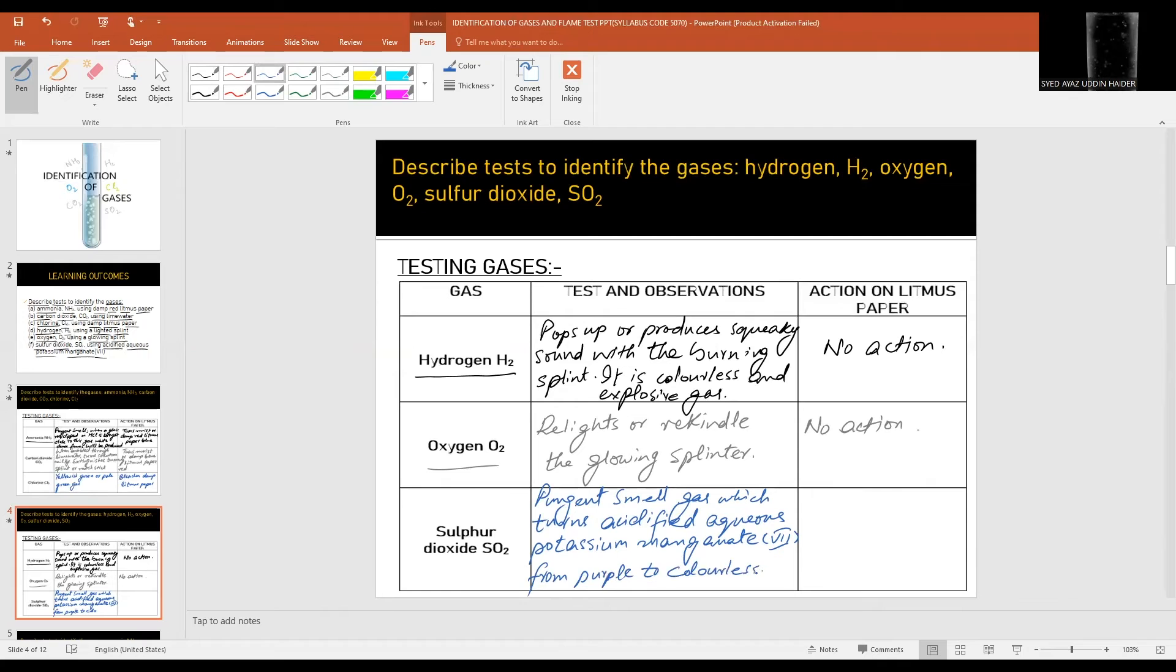It's an acidic oxide so it turns moist damp blue litmus paper to red due to the production of H positive ion in water.